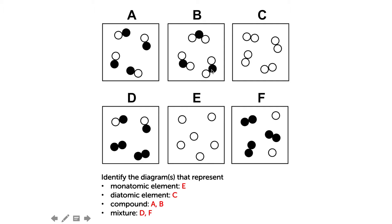Box B also represents a compound because in each molecule there are two types of elements. In box D, we have a compound and an element both placed in the same box, so it's a mixture of a compound and an element. In box F, we have one element and a different element mixed together, so box F represents a mixture of two different types of elements.